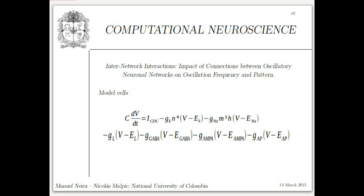Now we are going to talk about the second simulation: inter-network interactions — the impact of connections between oscillatory neuronal networks on oscillation frequency and pattern. The model cell is the same as in the first simulation, so we will not describe it again.